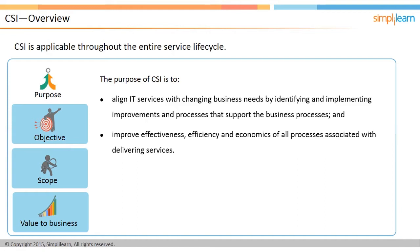Aligning IT services with changing business needs requires both achieving and surpassing the objectives, otherwise called effectiveness, and obtaining these objectives at the lowest cost possible, otherwise called efficiency. For instance, to increase effectiveness, you can reduce the number of errors occurring from an activity in a process. To make a process more efficient, you can eliminate unnecessary activities or automate manual operations.